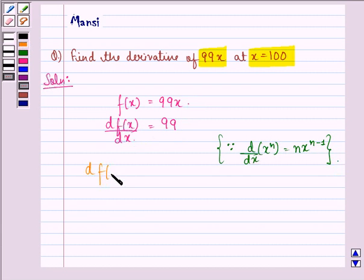We have to find out df(x) by dx at the point x equal to 100. Since there is no x, this will remain as it is. So our answer to this question is 99.